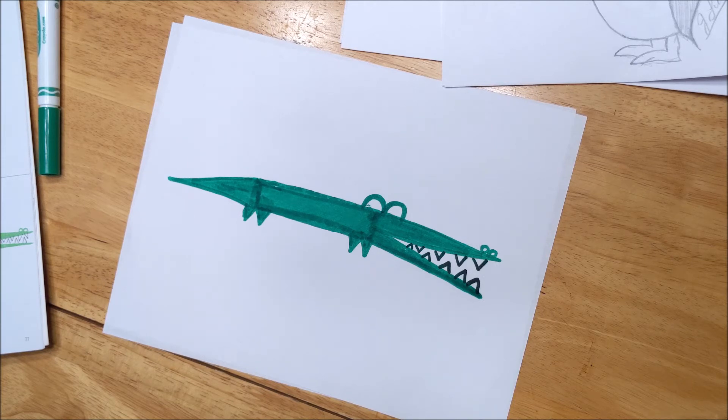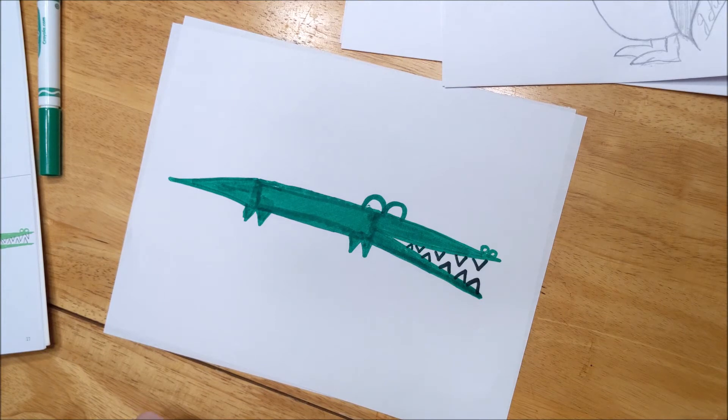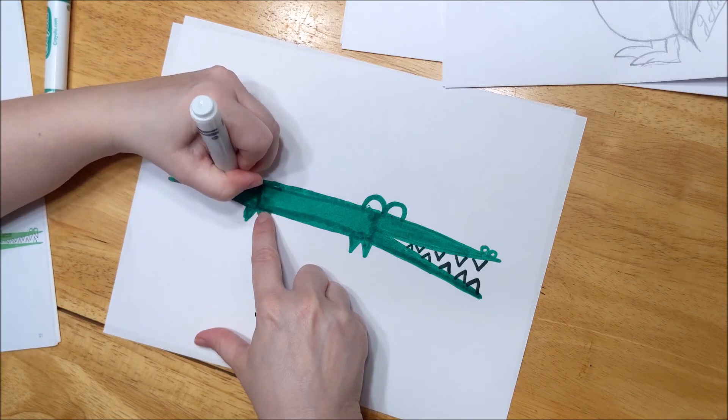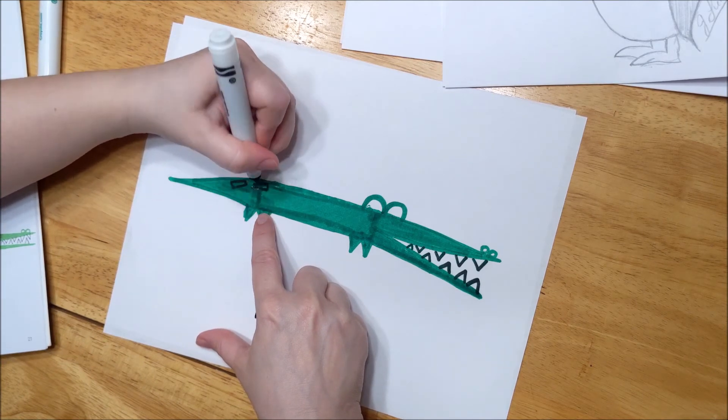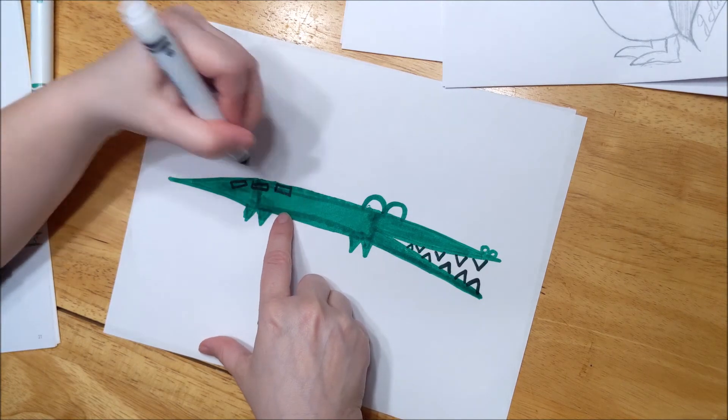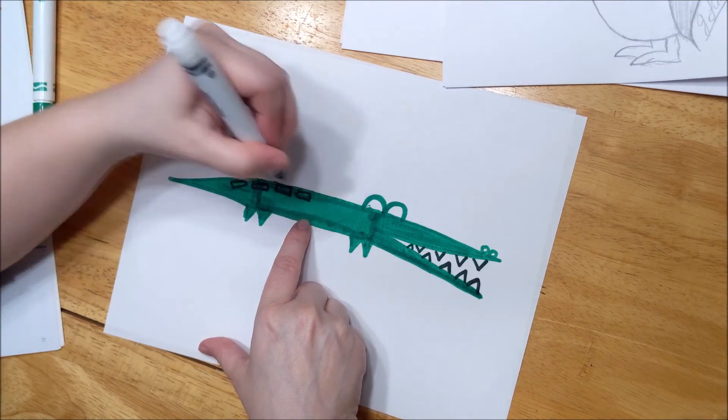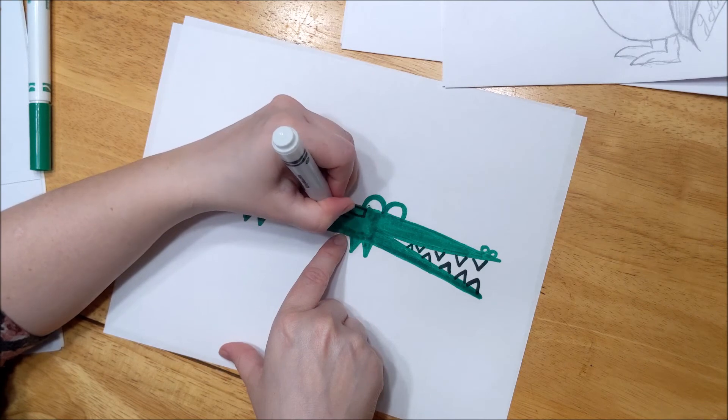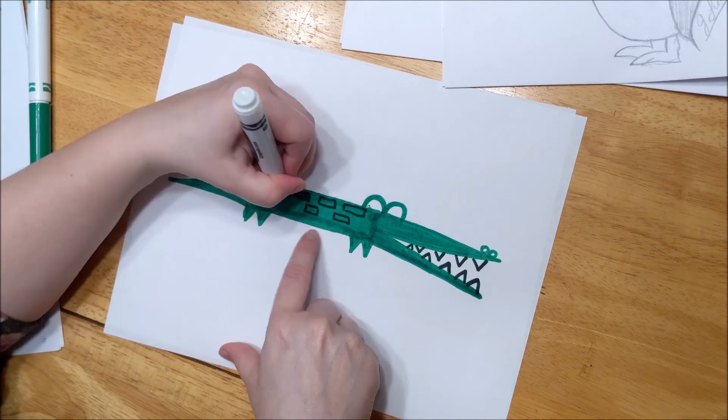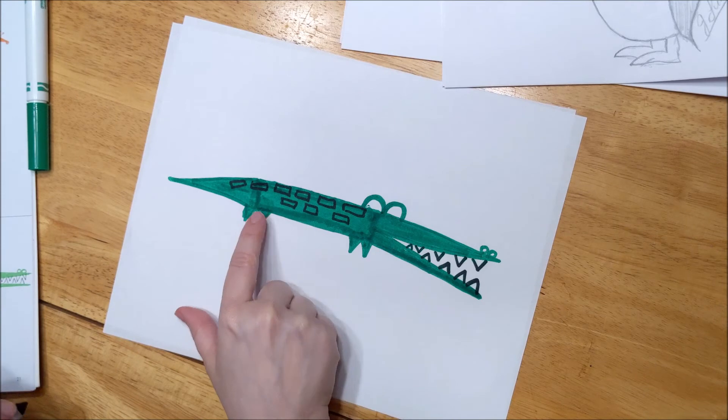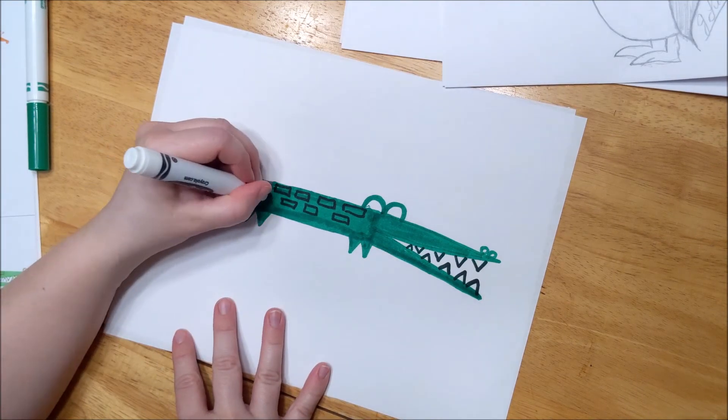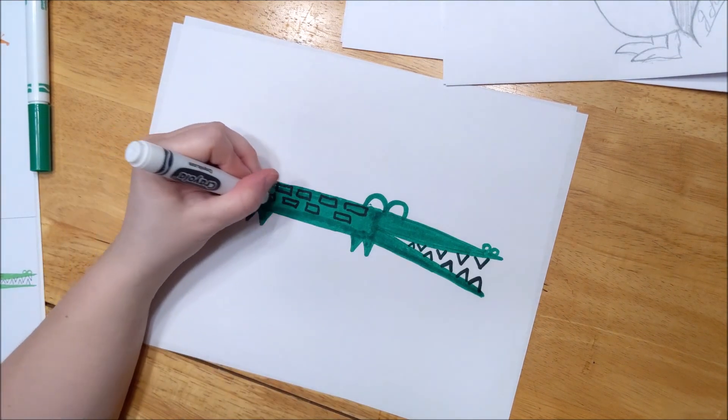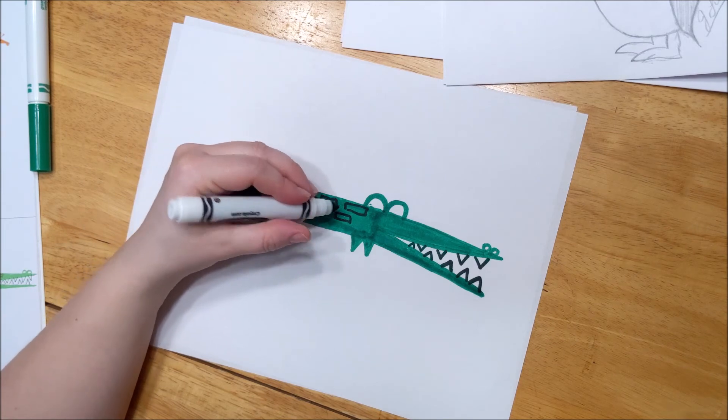And then after that, I'm going to put some smaller rectangles throughout his body just to give it some detail. Let's add some small rectangles inside here to show his scales. Try to leave his, don't put any along the bottom if you can do that. Just the top half of them right here. You want to do some dots in between those rectangles.